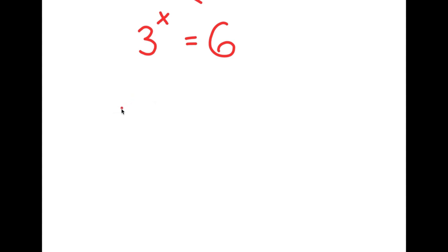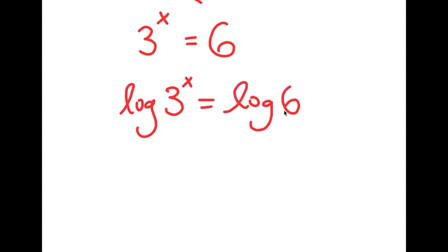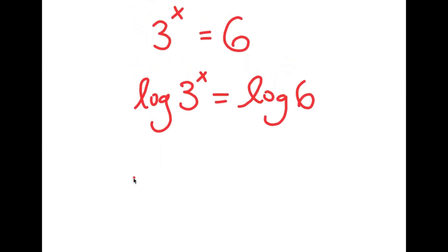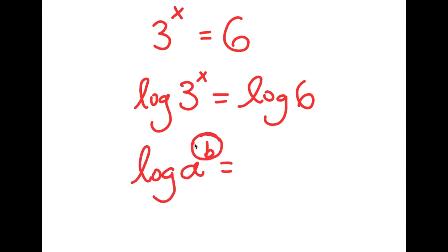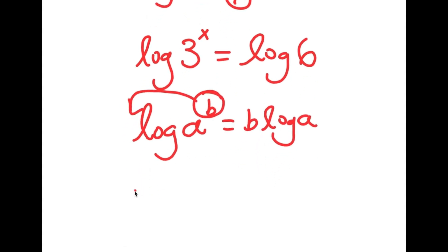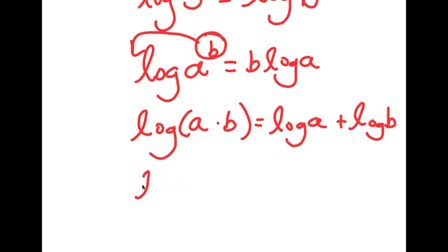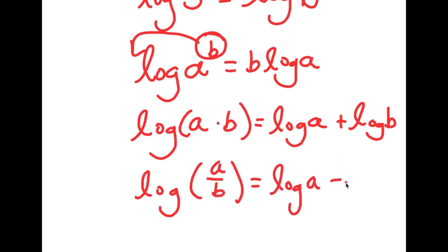If I take the log on both sides, I get log 3 to the power of x is equal to log 6. There are three important logarithmic properties you should know. First, log a to the power of b equals b times log a. Second, log of a times b equals log a plus log b. And finally, log of a over b equals log a minus log b.